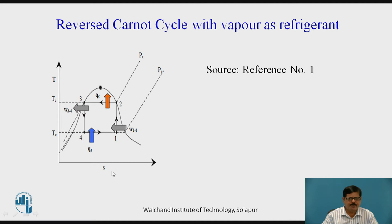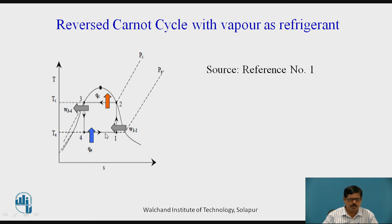On the temperature-entropy (T-S) diagram, process one to two is isentropic compression where work W₁₋₂ is supplied to the compressor. Isothermal heat rejection is practically possible because it occurs during condensation of the vapor. During compression, the wet vapor is compressed to dry saturated vapor — at point one the refrigerant is inside the dome as a liquid-vapor mixture, and at point two it is on the saturated vapor line with dryness fraction equal to one.